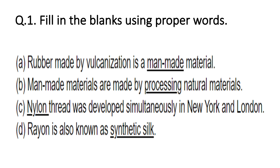Second fill in the blank: man-made materials are made by processing natural materials. Whatever natural material is obtained has undergone various chemical reactions or processes, and then only the man-made material is produced. Hence, we can say that man-made material is always made by processing of natural materials.